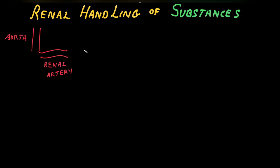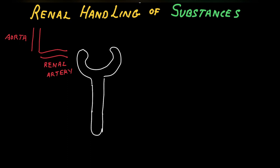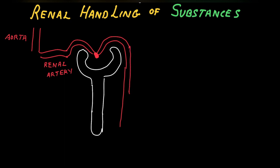Good day dear students. This is a video on renal handling of various substances. I have drawn the aorta and the renal artery. I'm drawing the renal corpuscle — that is the Bowman's capsule and the glomerular capillaries — and this is the tubular part of the nephron. The glomerular capillaries are derived from the afferent arteriole and drain into the efferent arteriole. The efferent arteriole leads into the peritubular capillaries, making this a portal circulation.